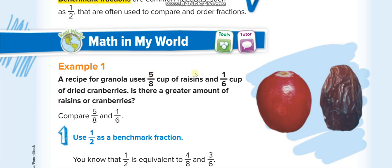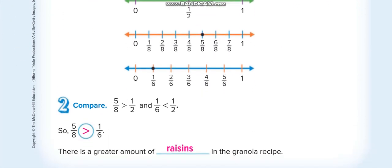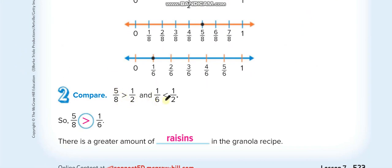For 1 over 6, the half of 6 is 3, but the numerator is 1 — that's less than 3, so 1 over 6 is less than half. Think of it as 1 out of 6 cups; half would be 3 out of 6, so this fraction is less than half. Meanwhile, 5 over 8: half of 8 is 4, so 4 over 8 is half, but we have 5 over 8 — that's more than half. So 5 over 8 is greater than 1 over 6.